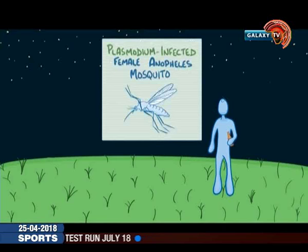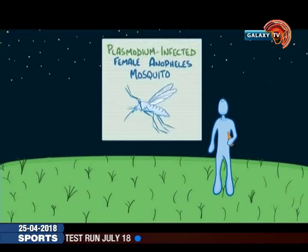Malaria starts when a plasmodium-infected female Anopheles mosquito hunts for a blood meal in the evening and through the night, drawn to carbon dioxide and bodily smells.